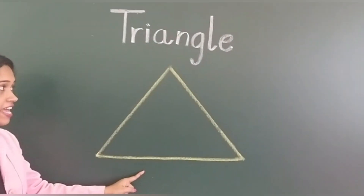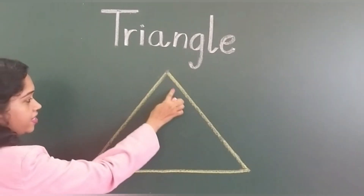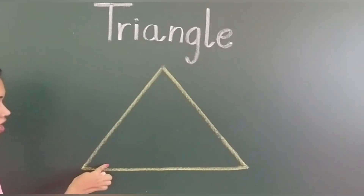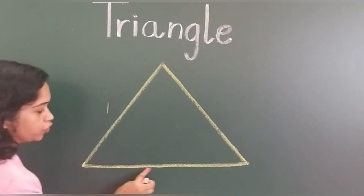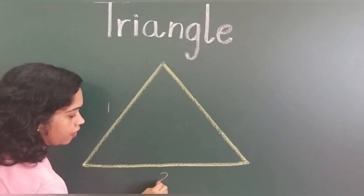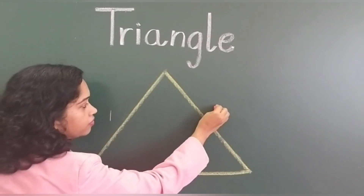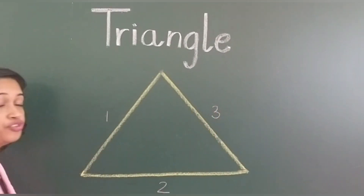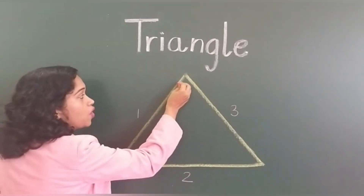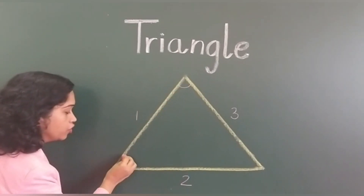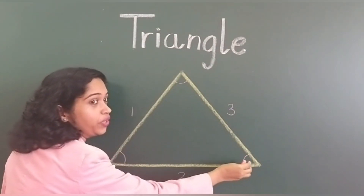It has three sides — one, two, and three. A triangle also has three corners — one, two, and three.